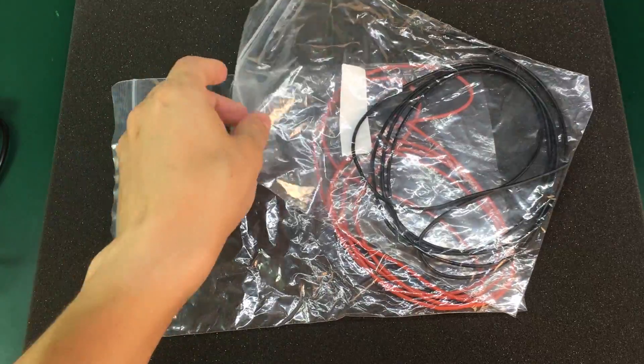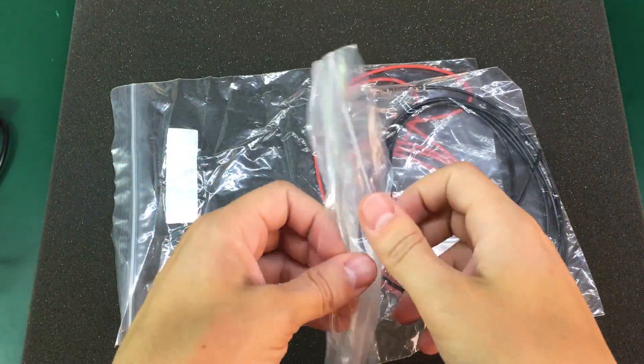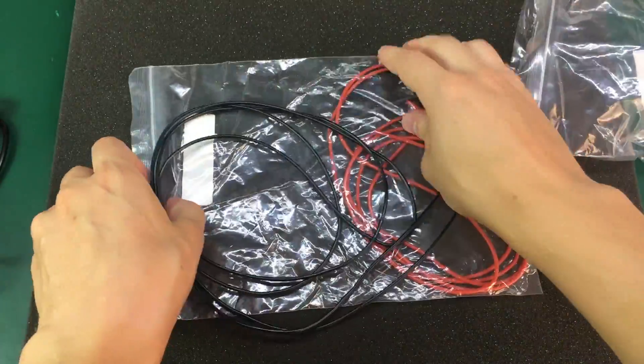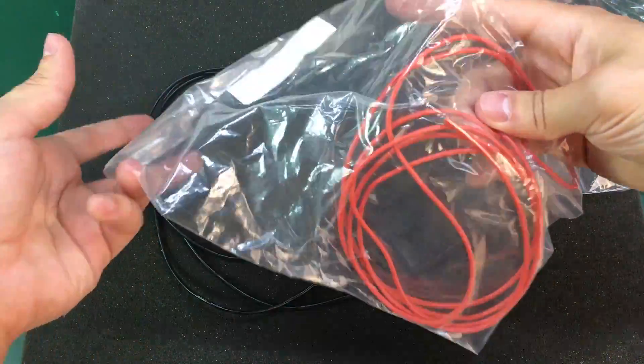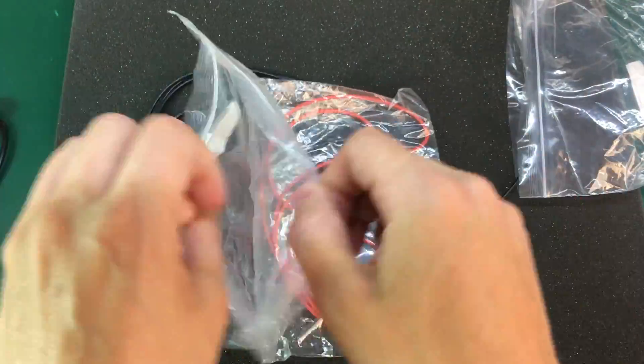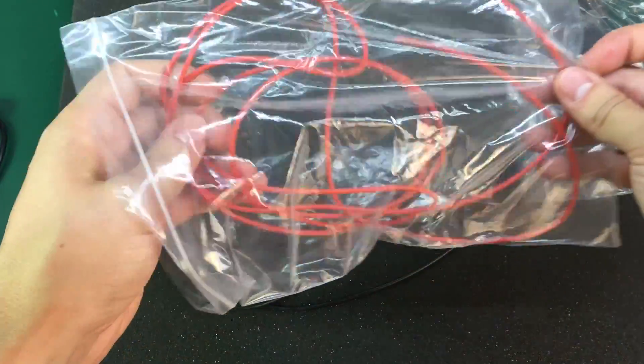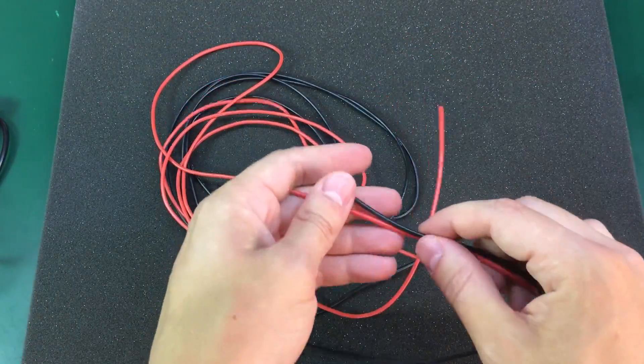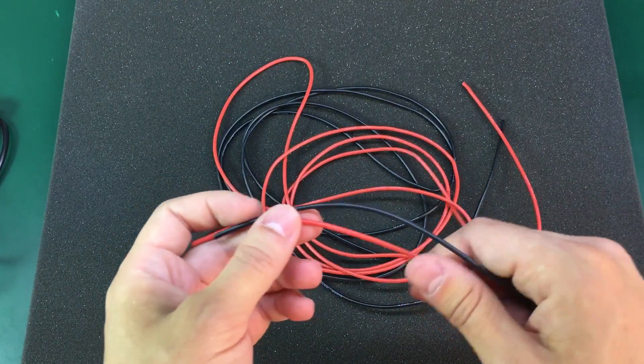Next I have these red and black silicone cables. They are 18 AWG and these are of course for my DIY bench cables that you are probably used to by now. There will also be more related items in this video like connectors. So keep watching for those.